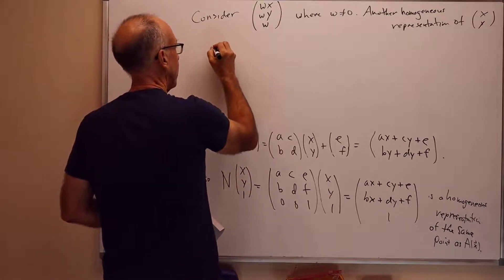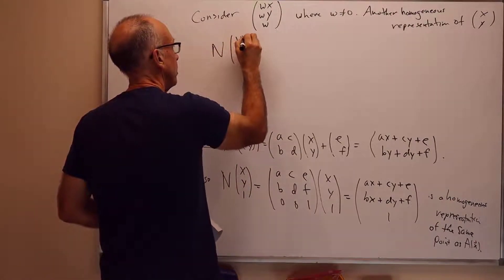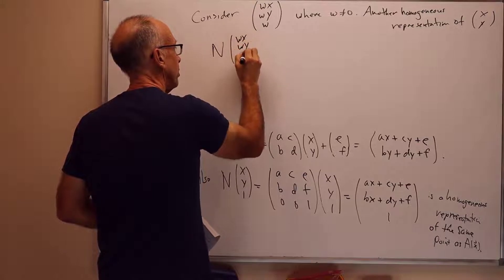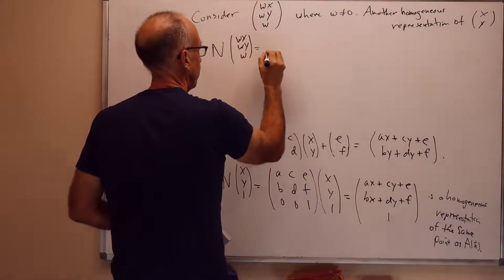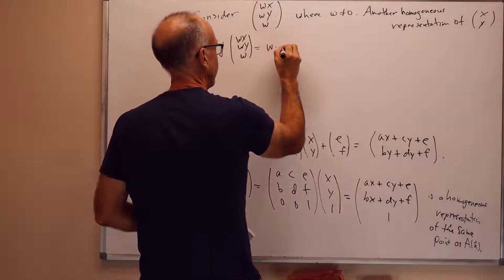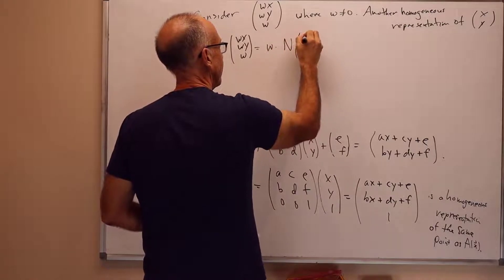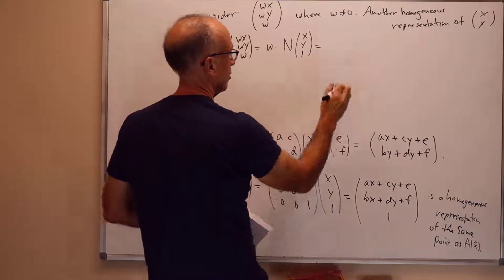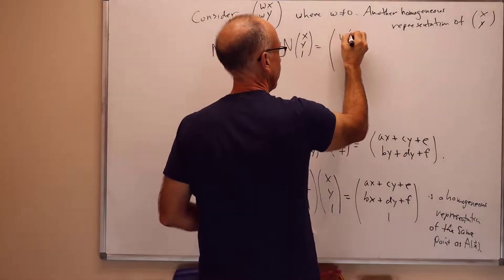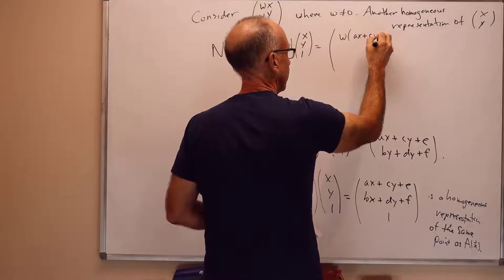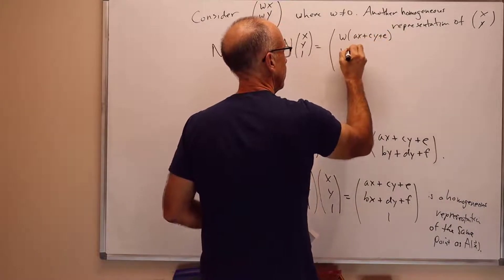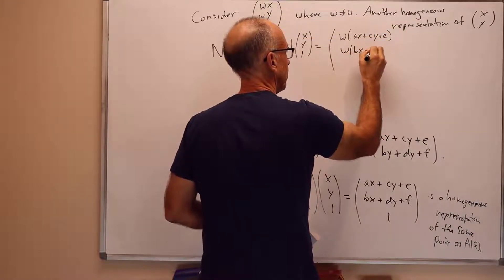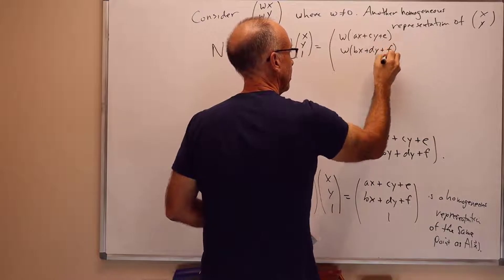Well, if we write this out, we have N times Wx, Wy, w is equal to W times N times x, y, 1. Just factoring out the W. So it's equal to W times this. So it's equal to W times Ax plus Cy plus E, W times Bx plus Dy plus F, W.